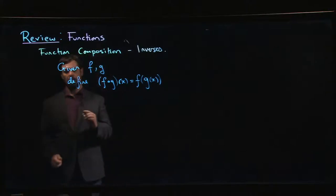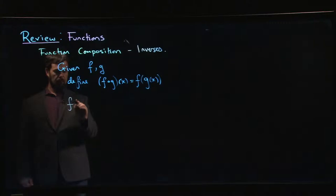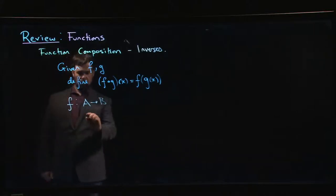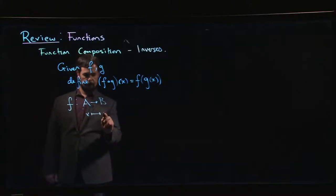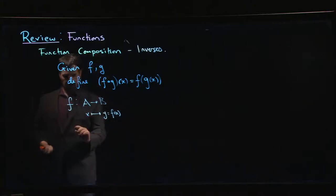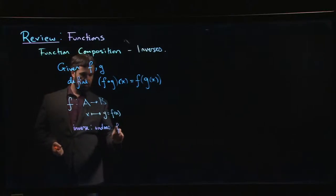So if I have a function f going from say a to b, so I have some element x here, and x gets sent to some y. So y is f of x. The inverse, I want the inverse to go the other way. So the inverse should be something which undoes what f did.